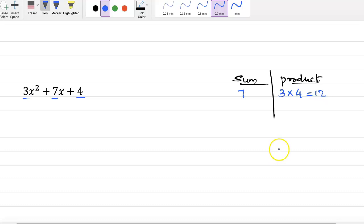So 1 into 12 is 12, 2 into 6 is 12, 3 into 4 is 12. When we add or subtract the factors we have to get 7, so here 3 plus 4 is 7, so let us use 3 plus 4.